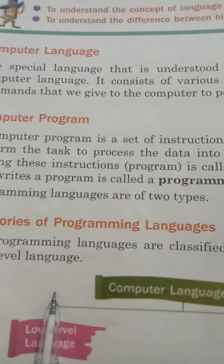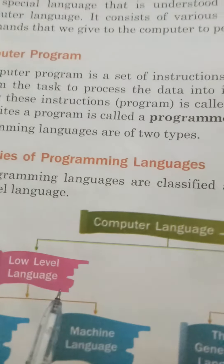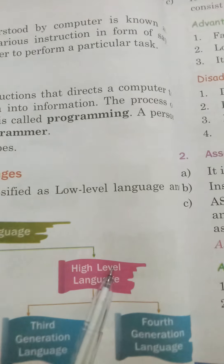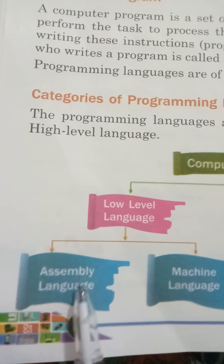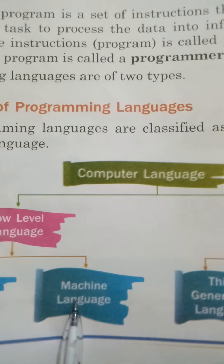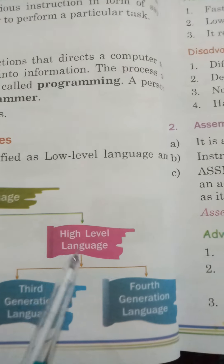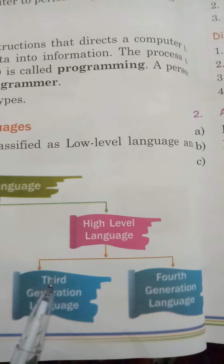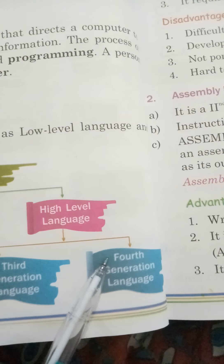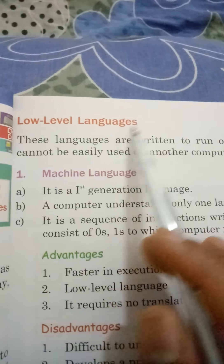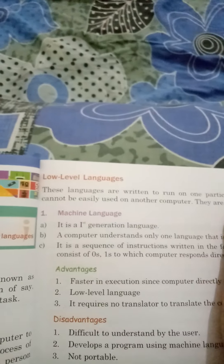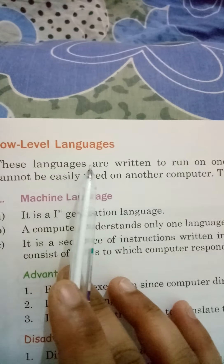Next are the Categories of Programming Languages. The programming languages are classified as low-level language and high-level language. Our two categories of computer languages are low-level languages and high-level languages. Low-level languages include assembly language and machine language, while high-level languages include third-generation language and fourth-generation language.